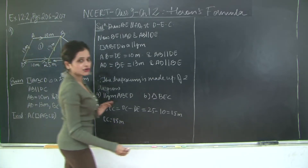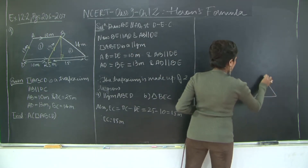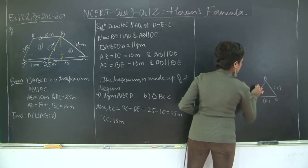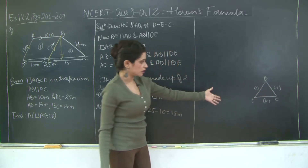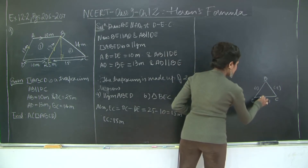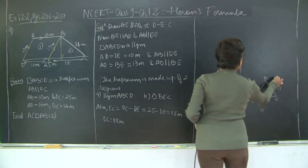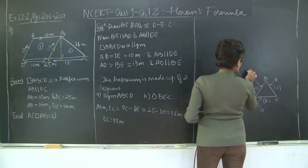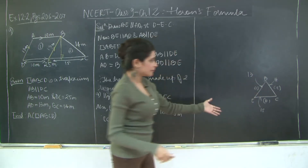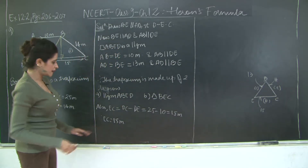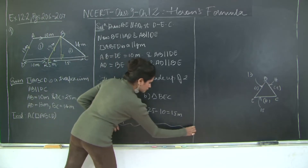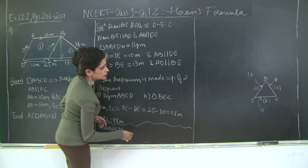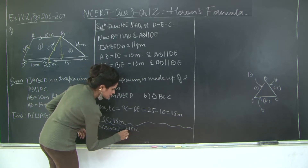Therefore the trapezium is made up of two regions: parallelogram ABED and triangle BEC. For triangle BEC the sides are: EC equals 15 meters, BC equals 14 meters, and BE equals 13 meters. Let's first find the semi-perimeter. Semi-perimeter of triangle BEC equals (b + e + c) divided by 2.